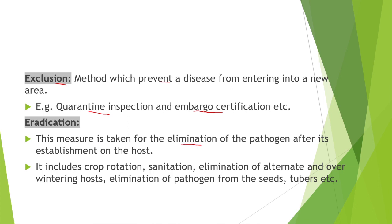Next is eradication: this measure is taken for the elimination of a pathogen after its establishment on the host. It includes crop rotation, sanitation, elimination of alternate and overwintering hosts, and elimination of pathogens from seeds and tubers. When a pathogen has infested a host, we use methods to completely eliminate that pathogen — through crop rotation, field sanitation, and elimination of alternate hosts.